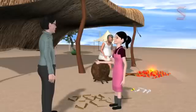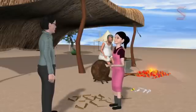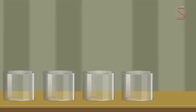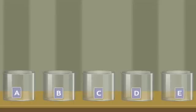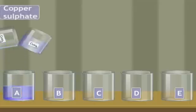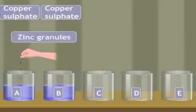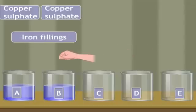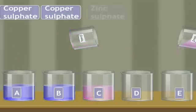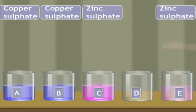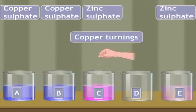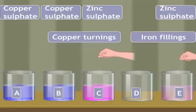Let me show you an interesting experiment. Let's take five beakers A, B, C, D, and E. Let's take copper sulfate in beakers A and B, and drop some zinc granules in beaker A and iron filings in beaker B. Take zinc sulfate in beakers C and E, drop copper turnings in beaker C and iron filings in beaker E. In beaker D, take some ferrous sulfate solution with a few copper turnings.